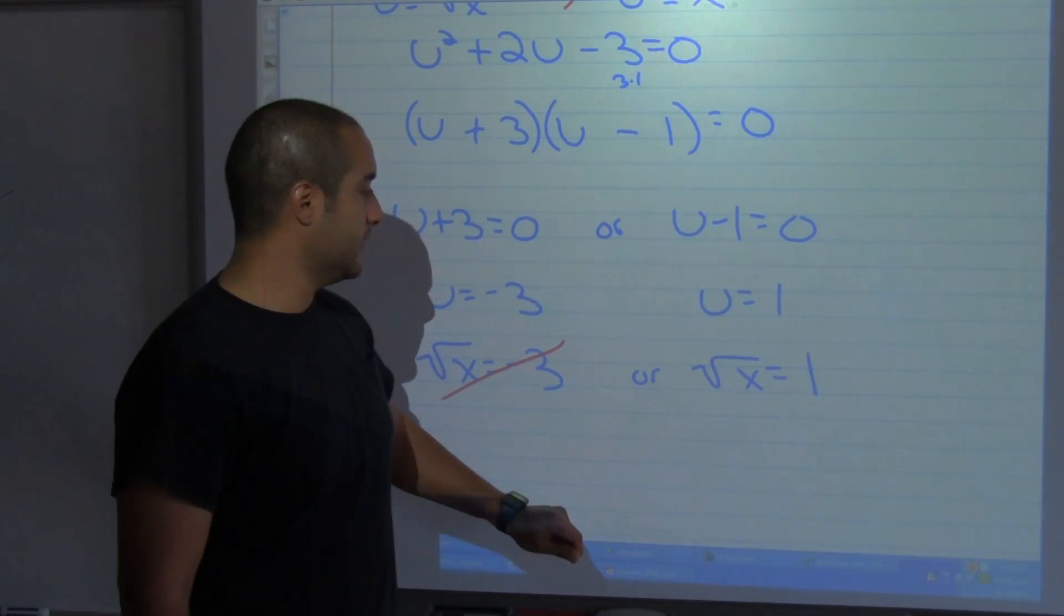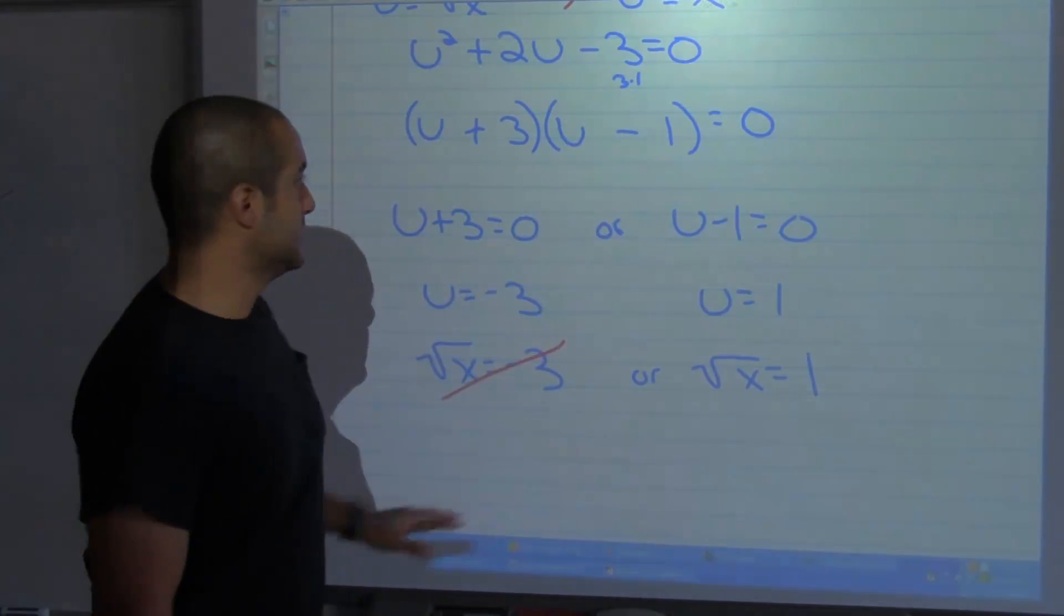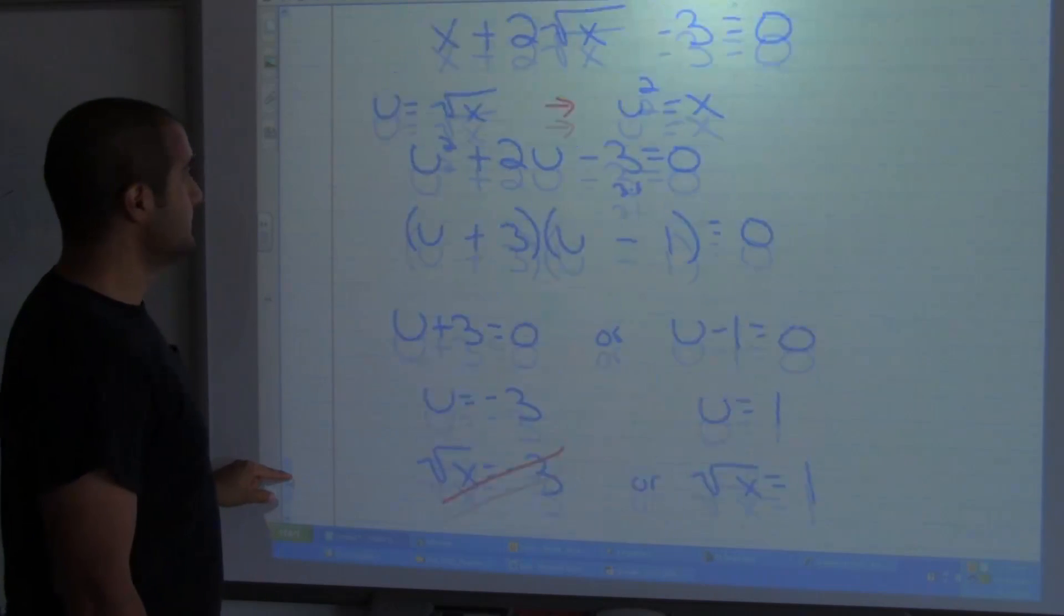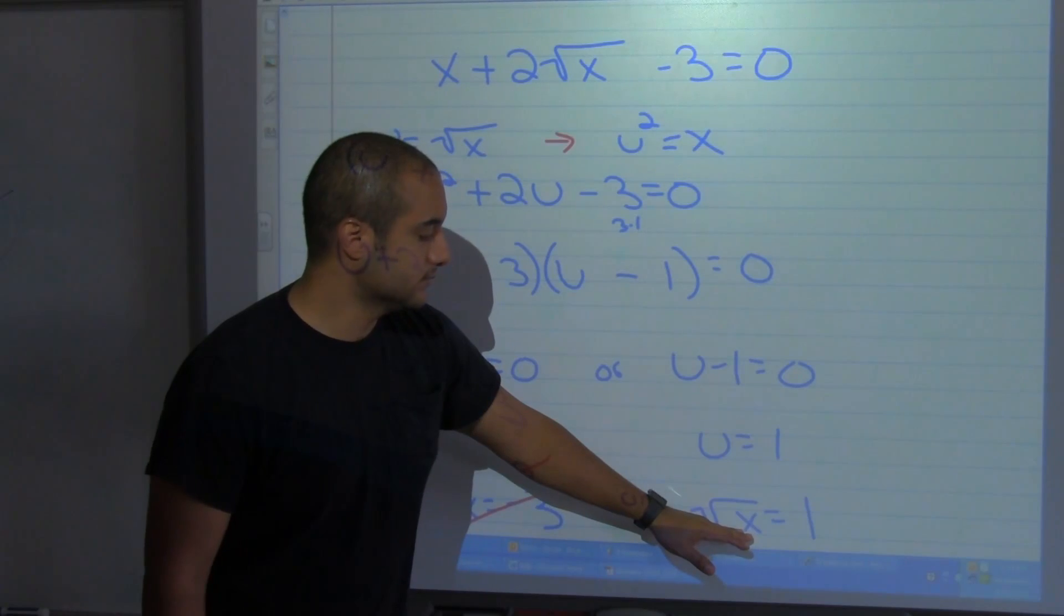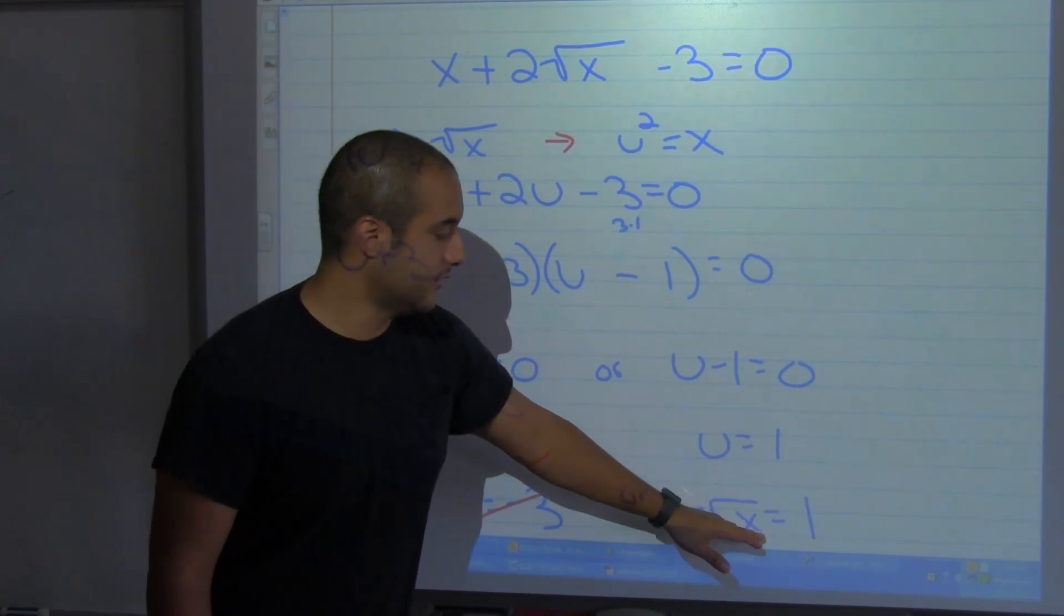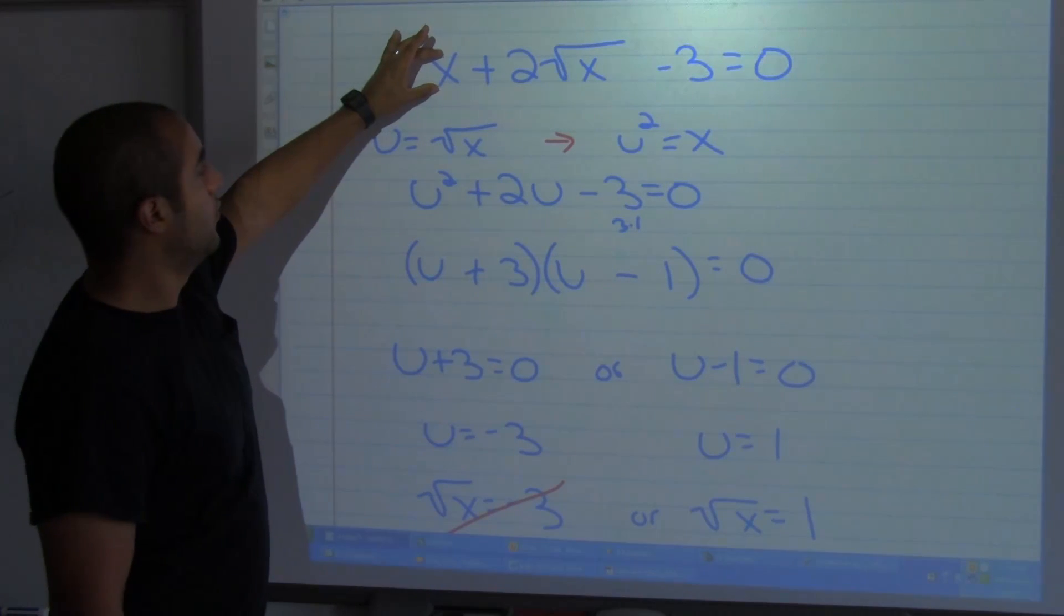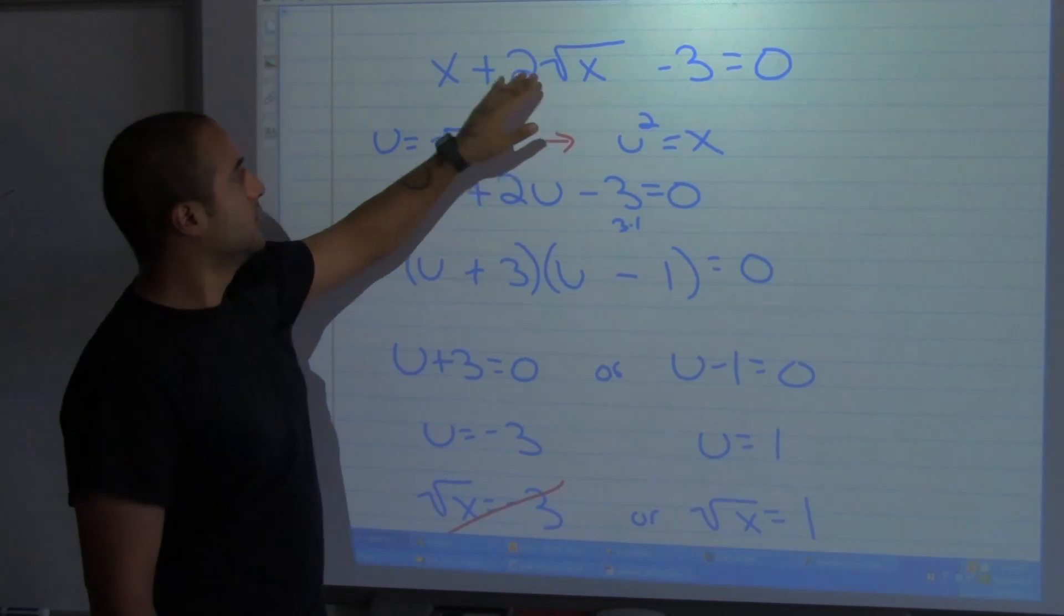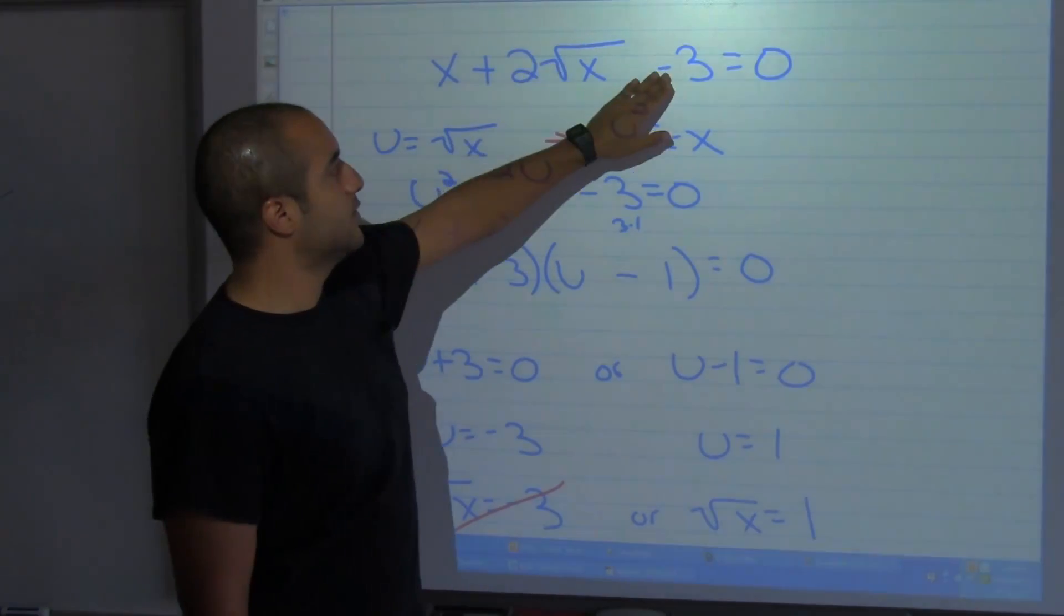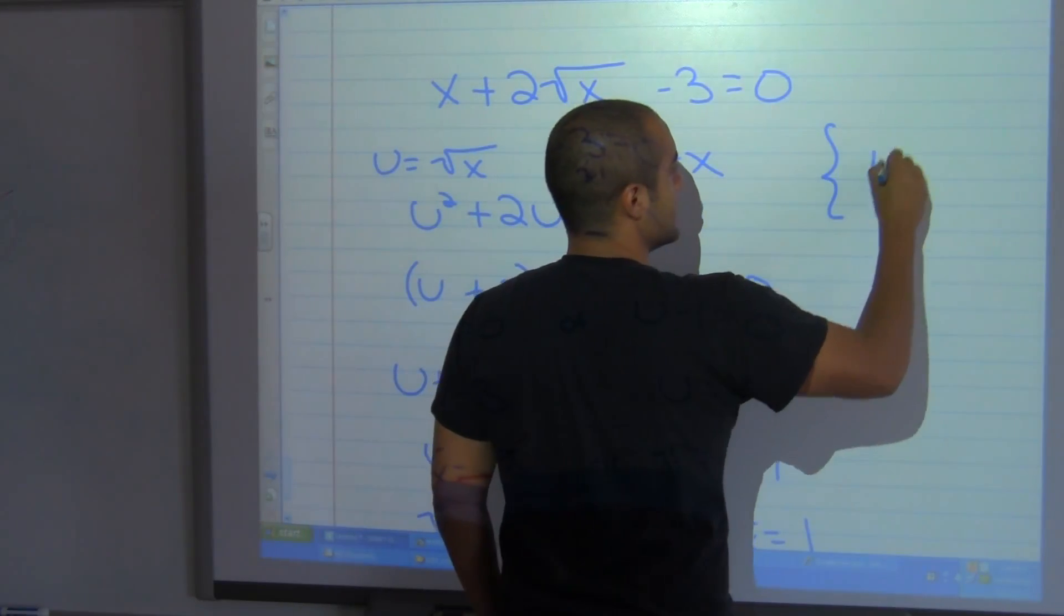And don't forget that I need to check these. So when I put in, when I substitute, well the square root of a number equal to 1 has to be 1. So 1 plus, this would be 2, 1 plus 2 is 3, 3 minus 3 is equal to 0. Our solution here is this side: 1.